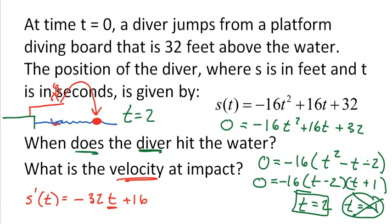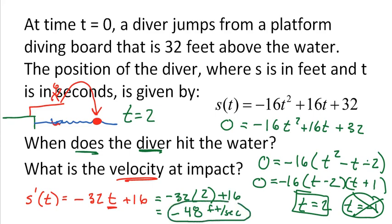Now that I've figured out the time it takes to hit the water, to find the velocity at impact I plug t equals 2 into the derivative: negative 32 times 2 plus 16 equals negative 48. So negative 48 feet per second is the velocity at the instant the diver hits the water.